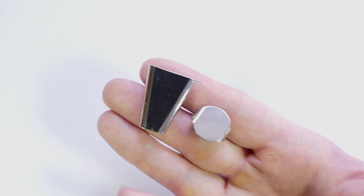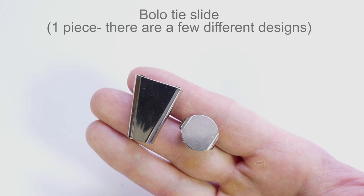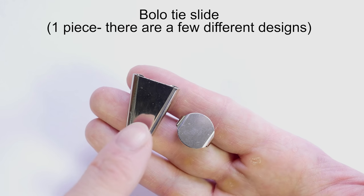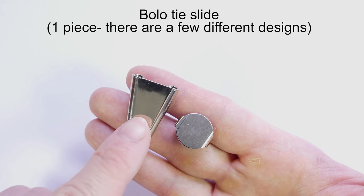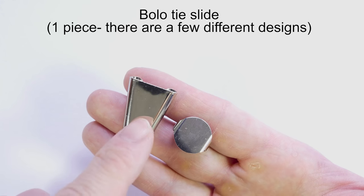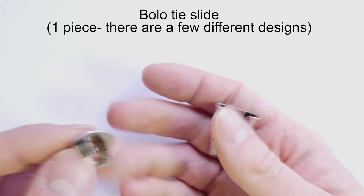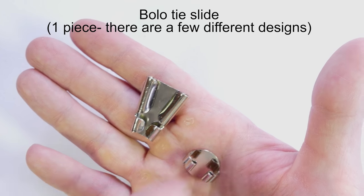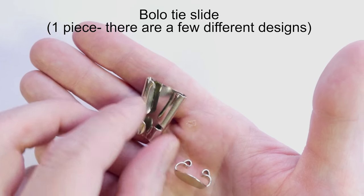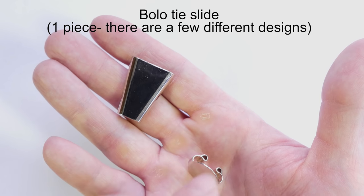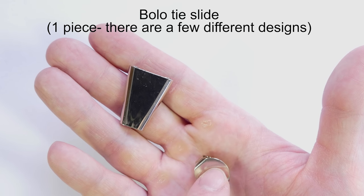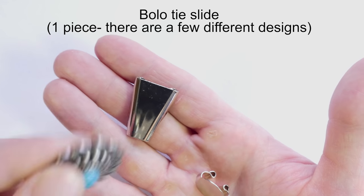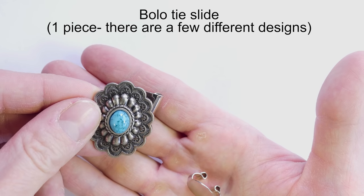Next, you're going to need a bolo tie slide. These come in a variety of designs and they make your bolo tie adjustable. Basically, they consist of two channels or legs and a flat surface at the top. On top of the flat surface, later on, we're going to place a decorative piece, the concho.